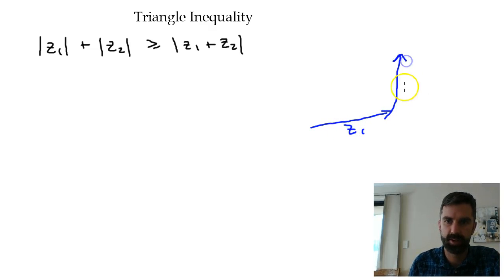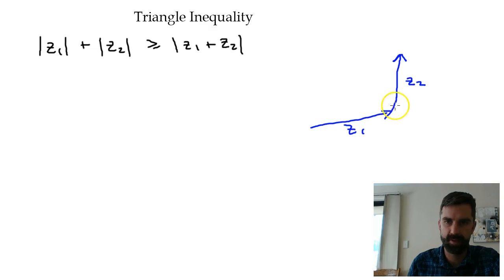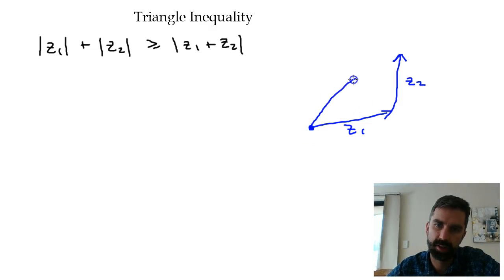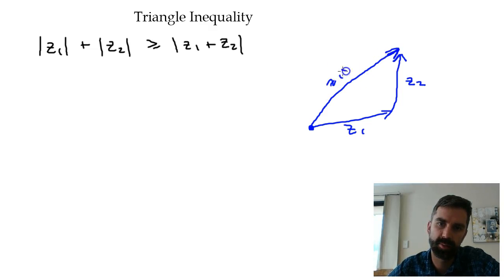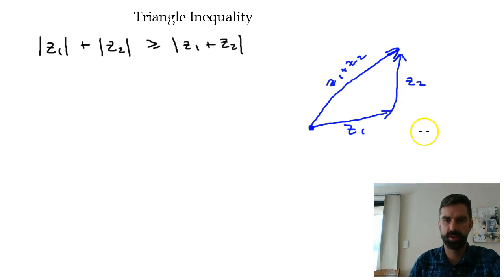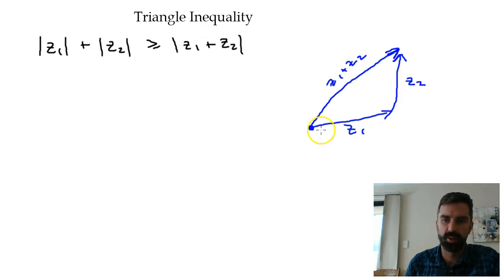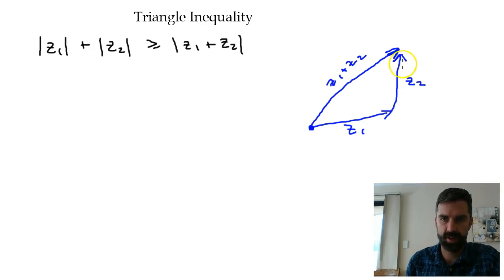We can look at it graphically and it kind of makes sense. If you imagine that's z1 and we add z2, the mod of z1 is the length of this line and the mod of z2 is the length of this line. So to get from here to here, one way is to take this entire vector and then this entire vector, or the shortcut is the vector that represents z1 plus z2.